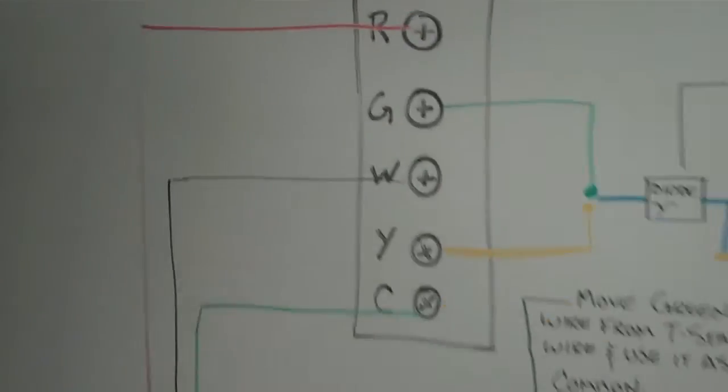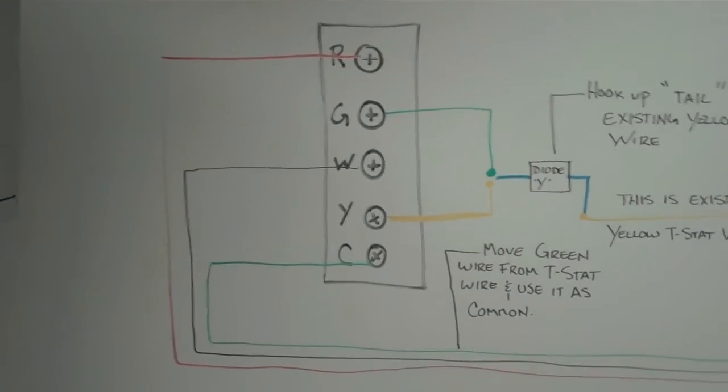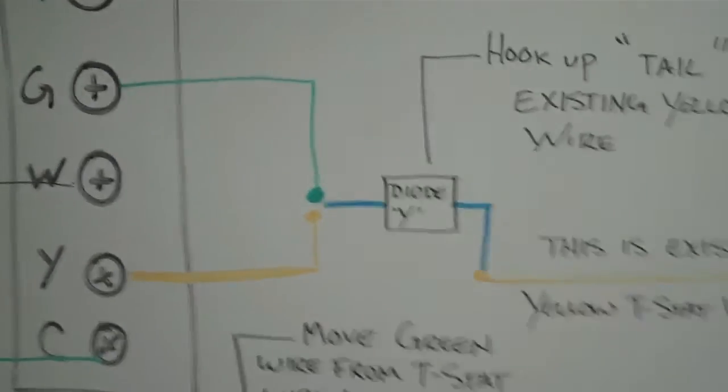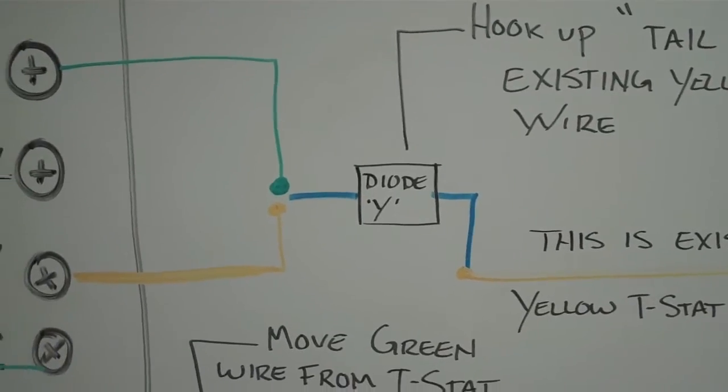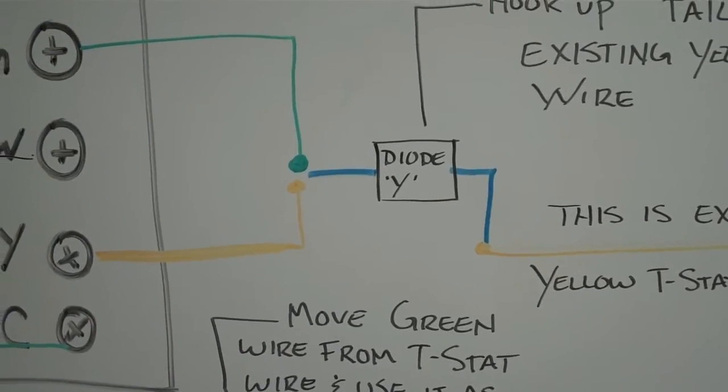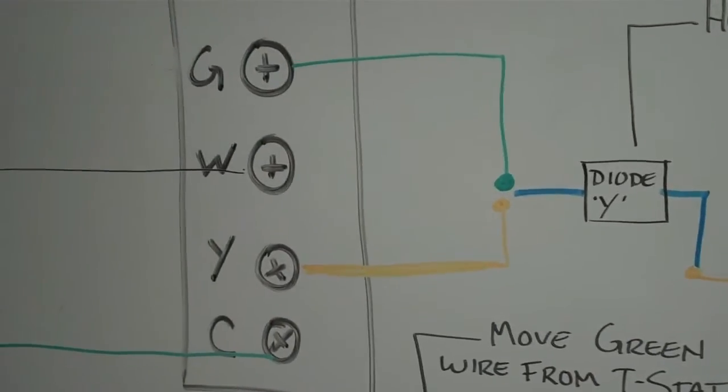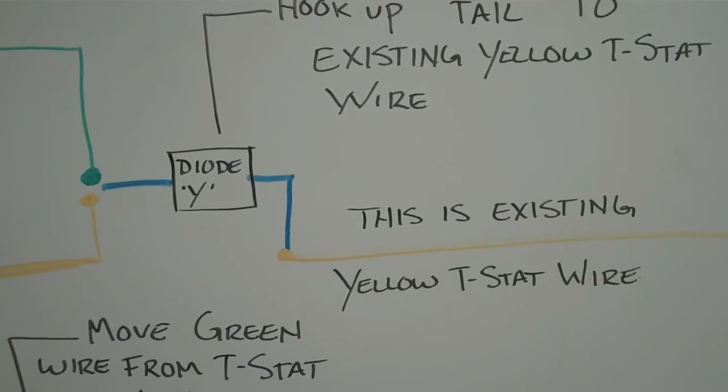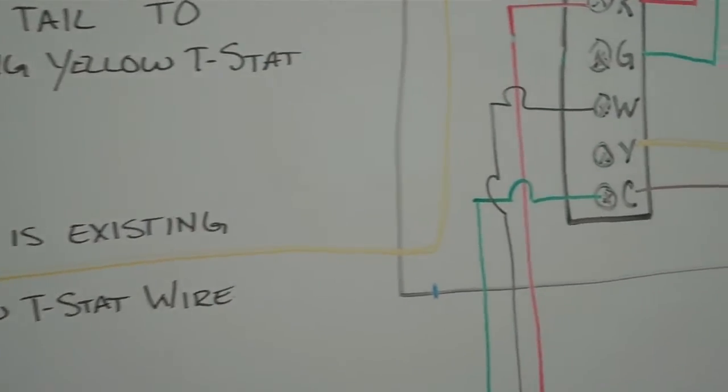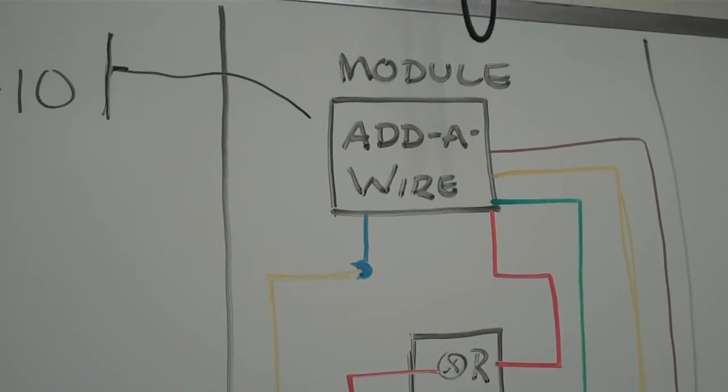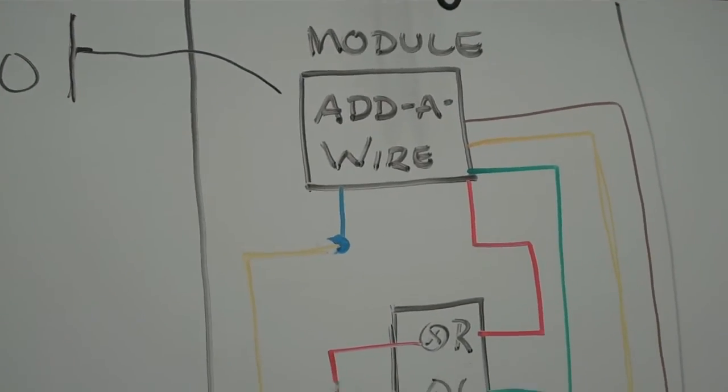So what this allows you to do is take a normal thermostat that has four wires, and they give you a diode Y. They supply you with a lead that comes off that has a yellow and a green. It goes back with a blue tail after the diode that you can replace the green and the yellow on your thermostat with, and then use that wire that comes off of it to go back to the furnace air handler and tie into the module that gets installed in the furnace.